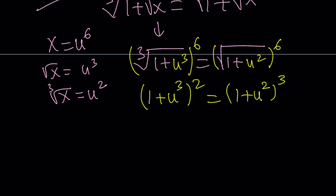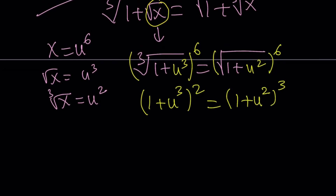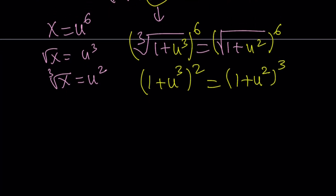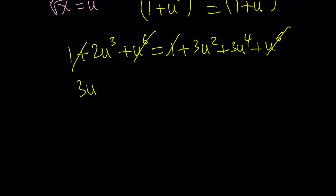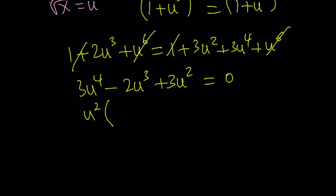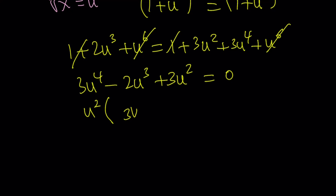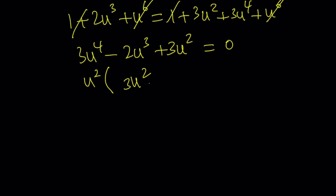Expanding the left side: 1 plus 2u cubed plus u to the 6th. The right side gives 1 plus 3u squared plus 3u to the 4th plus u to the 6th. The u to the 6th terms cancel, and the 1s cancel as well. Putting everything on the same side: 3u to the 4th minus 2u cubed plus 3u squared equals 0. Factoring out u squared gives u squared times (3u squared minus 2u plus 3) equals 0.